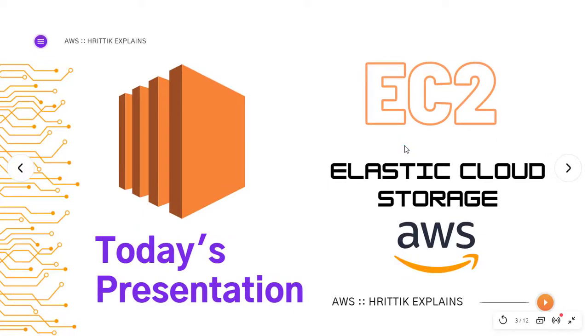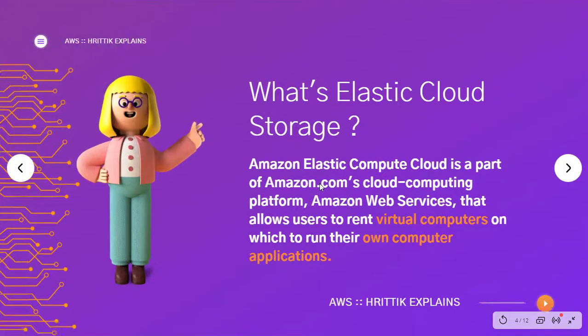In today's video we will talk regarding EC2, or Elastic Cloud Storage from AWS. So what is EC2? Amazon's Elastic Compute Cloud is a part of Amazon's cloud computing platform which allows users to rent virtual computers on which they can run their own computer applications. Basically it's just an online computer which you can run using RDP, or Remote Desktop Protocol, from your own PC.